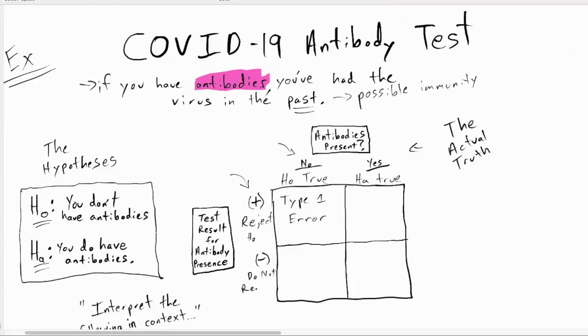If you don't have antibodies and the test tests negative, is that good or bad or correct or incorrect? That's correct. If you actually do have antibodies and the test tests positive, that's a correct decision. And if the truth is you do have antibodies and you don't reject the null, that's that type two error.